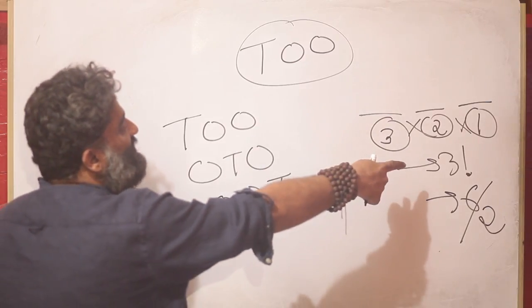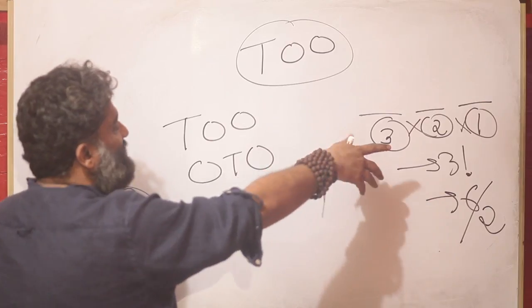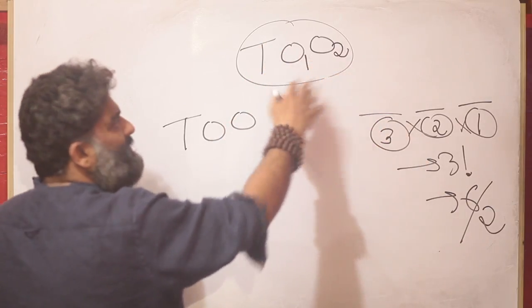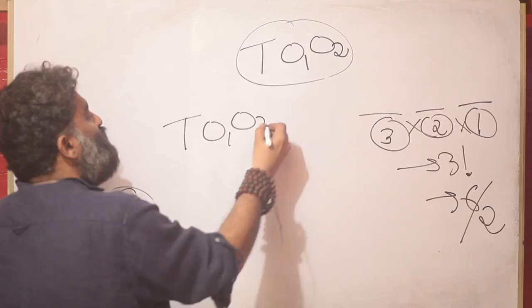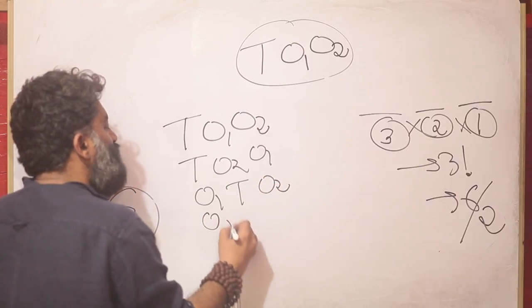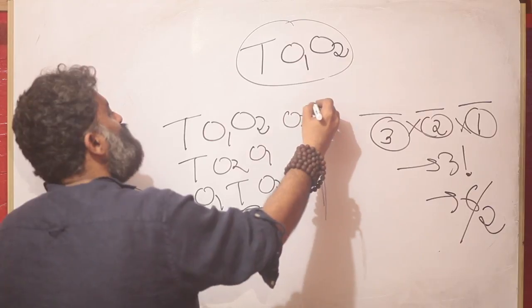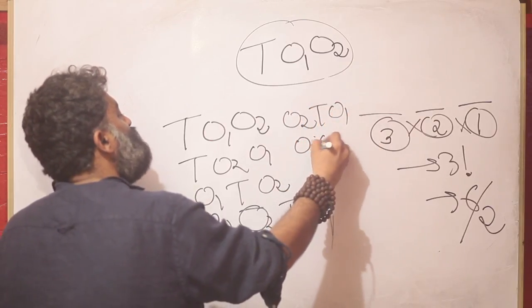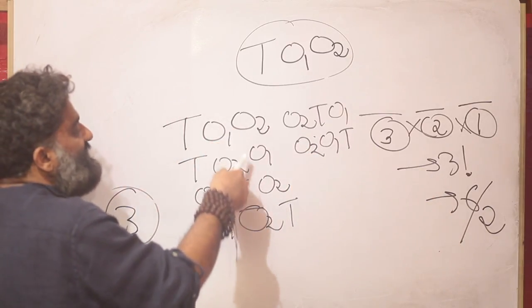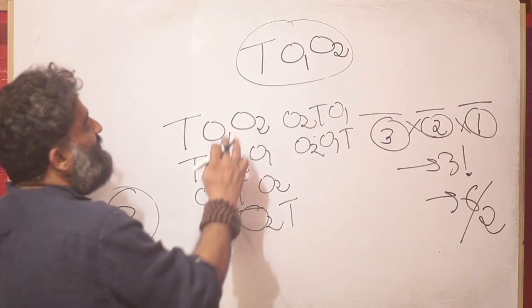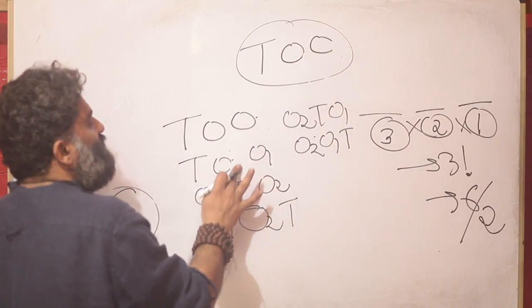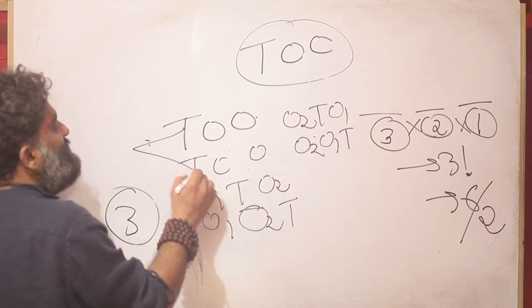What was happening? Why was that not working? When we said 6 ways, we were thinking of O1 and O2 as separate things — like 3 different people. But these are not people; these are just letters. So if you wrote T-O1-O2 and T-O2-O1, notice what happens when you remove the markings: they become the same word. What was counted as 2 ways becomes 1. The same merging happens for OTO and OOT — two ways each become one. So every pair of counted arrangements was actually one.